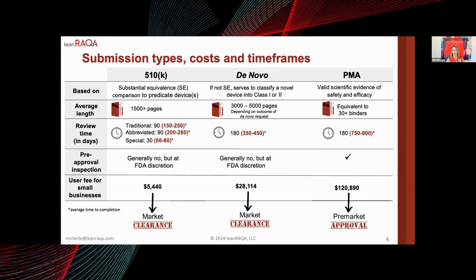PMAs — pre-market approvals — are the equivalent of 30-plus three-inch ring binders. The FDA measures submissions against internal clock days: 90 clock days for a 510k, though the average is about 200 days once you factor in additional information requests. De novos have a 180-day clock with an average of 400 days. PMAs average about 800 days.